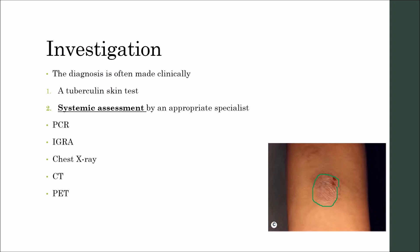The IGRA is approximately as sensitive as skin testing — about 80% in active disease — but has the advantage of being independent of previous BCG vaccinations. HIV status must be determined. Chest X-ray, CT, and PET scan are among other tests that must be considered.